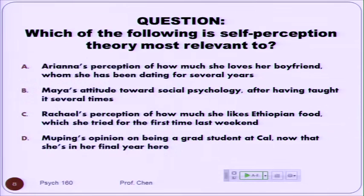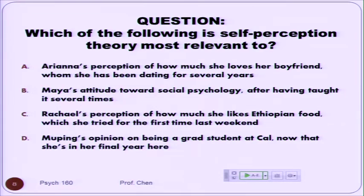And the reason for that is because what? Somebody explain it to those who chose something else other than C? Come on, make up high duty. Come on. It needs to be something ambiguous. She doesn't know much about it yet. She doesn't know what her opinion is about eating Ethiopian food. It's the first time.